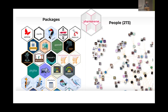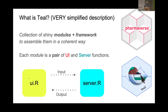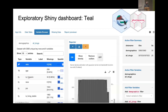Luckily, I found at least 273 people from the Pharmaverse community who were thinking about the same thing and actually shared those modules in a specific set of packages. Those packages are under the framework called TIL. I would say TIL is a collection of Shiny modules plus a framework to assemble them in a coherent way. Each module is a pair of UI and server functions. We handle the communication between the UI and the server, between input and output. With just a few lines of code I'll present next, you could run and have a dashboard with multiple tabs that covers most use cases for data exploration, including filtering, data summary, visualization, and graphs.